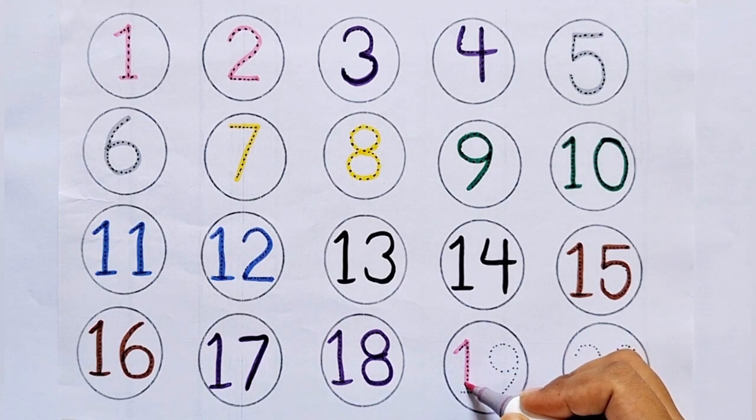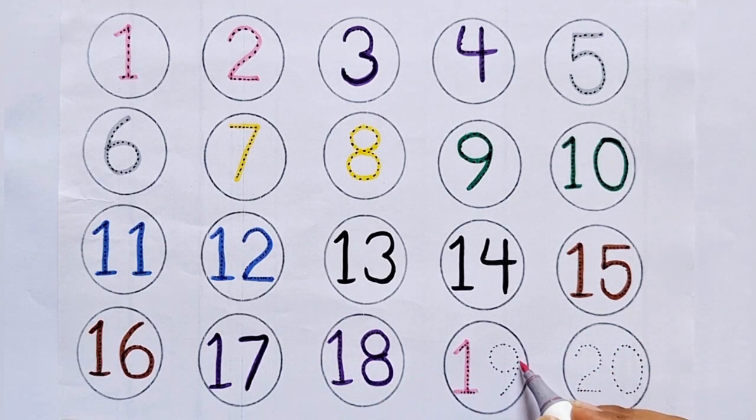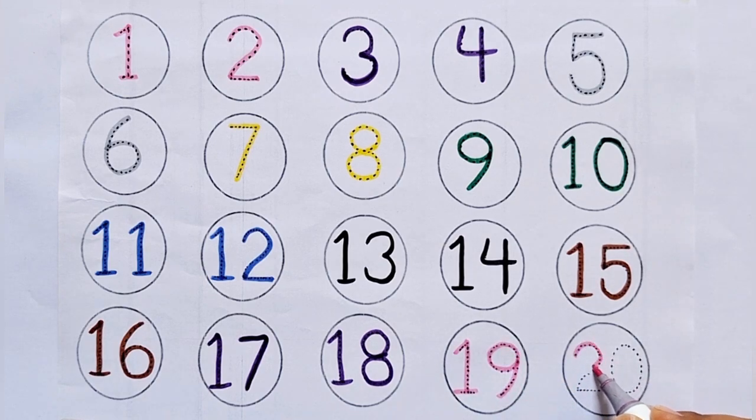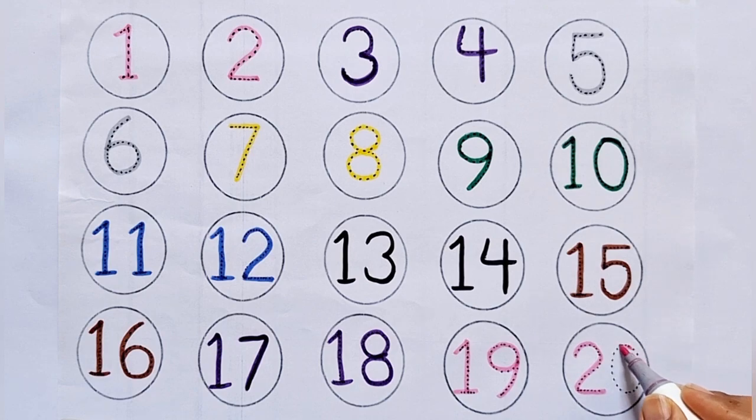19. 1-9, 19. After 18 comes 19. 20. 2-0, 20. After 19 comes 20.